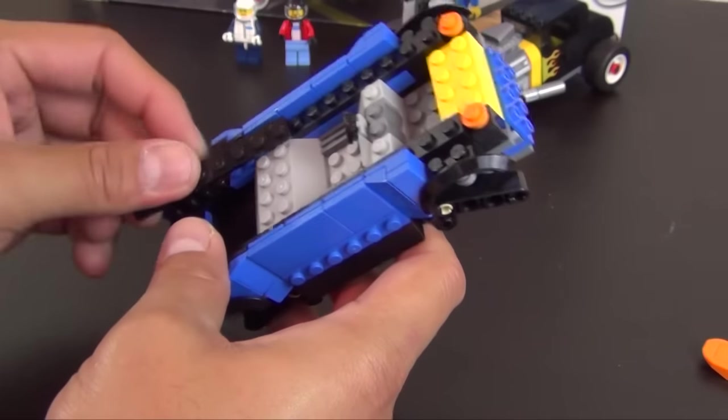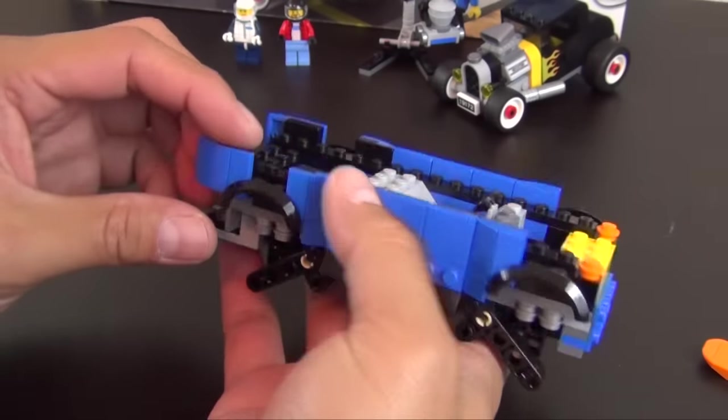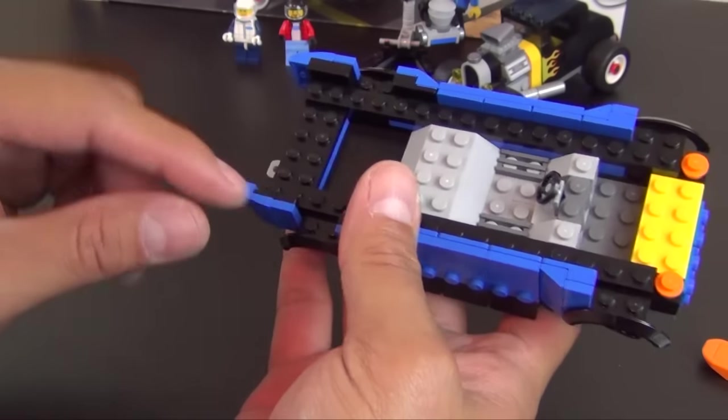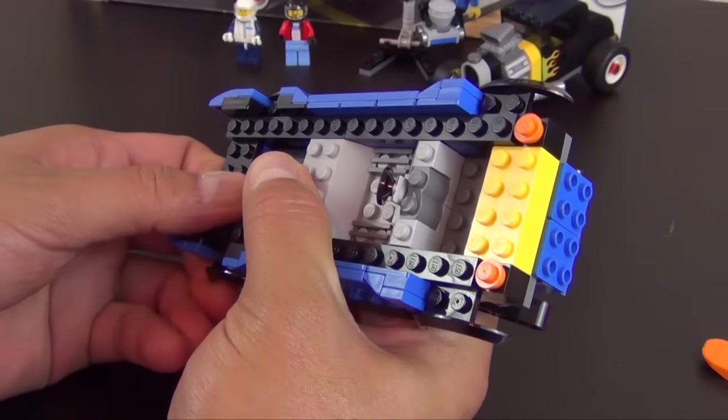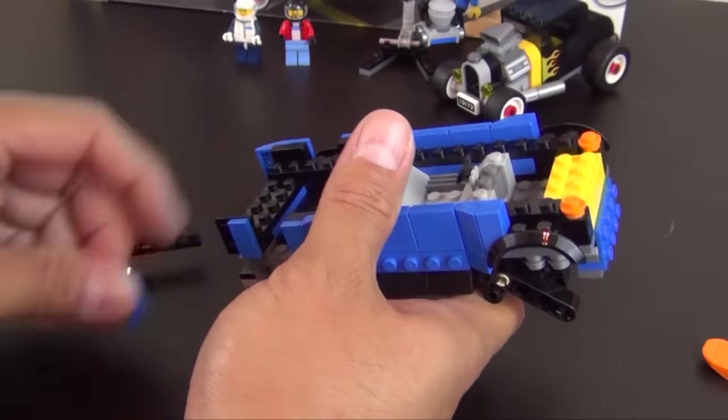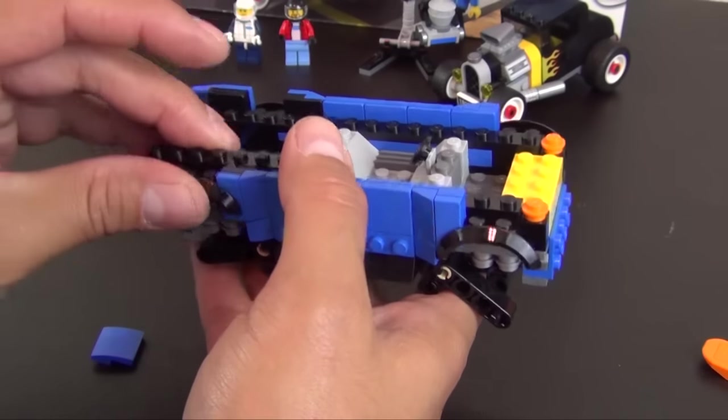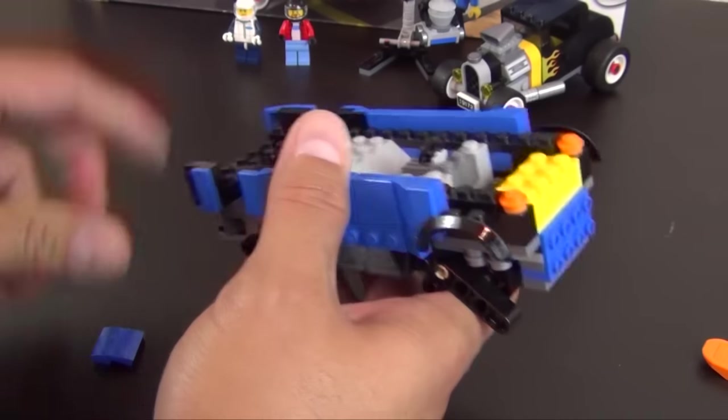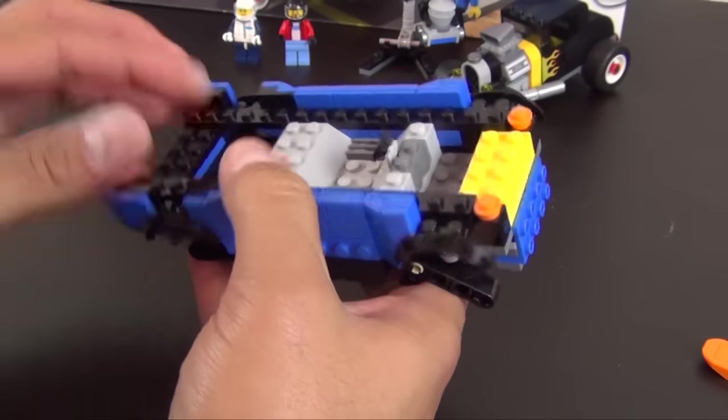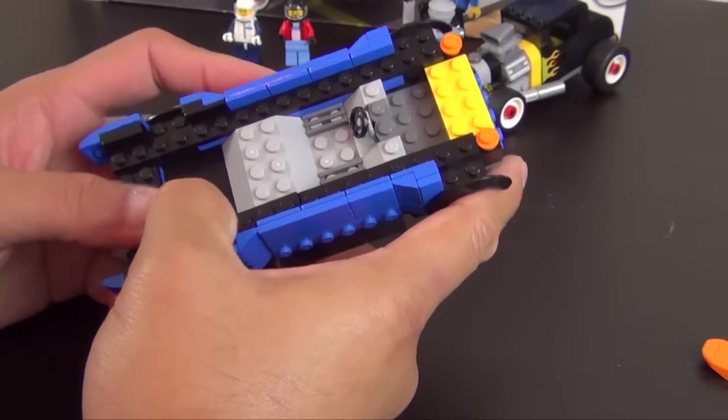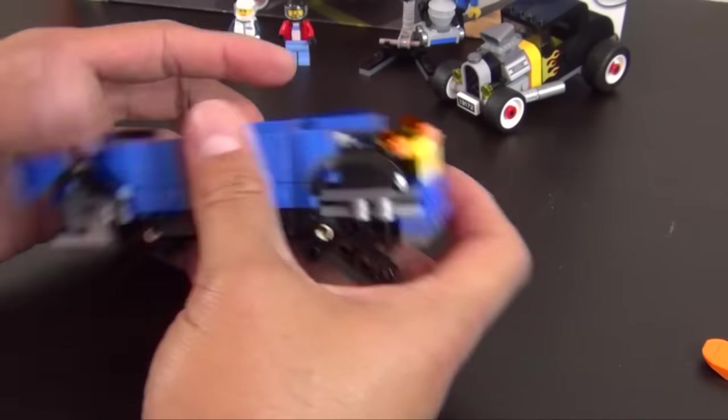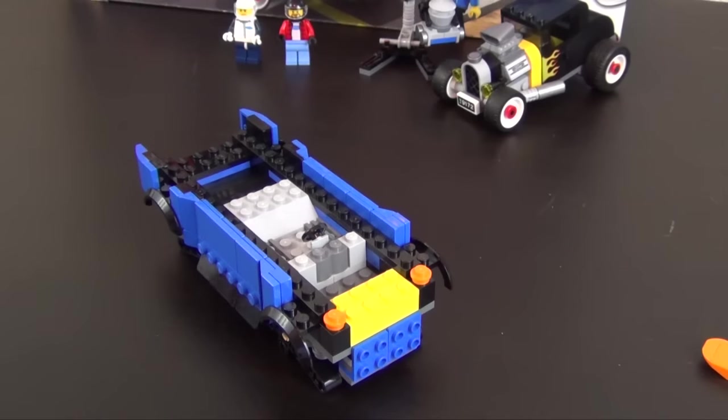Because then you can kind of see the gap right in here because we're missing that plate. So I'm going to pop this off, pop these two off. Luckily it was an easy enough fix. All right, now it looks like we're left with a normal amount of extra pieces.